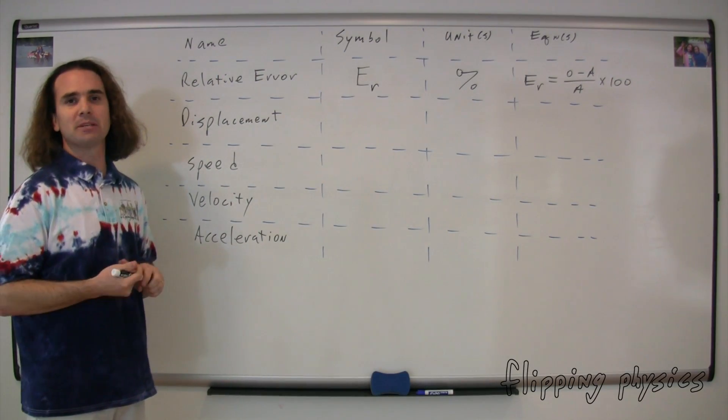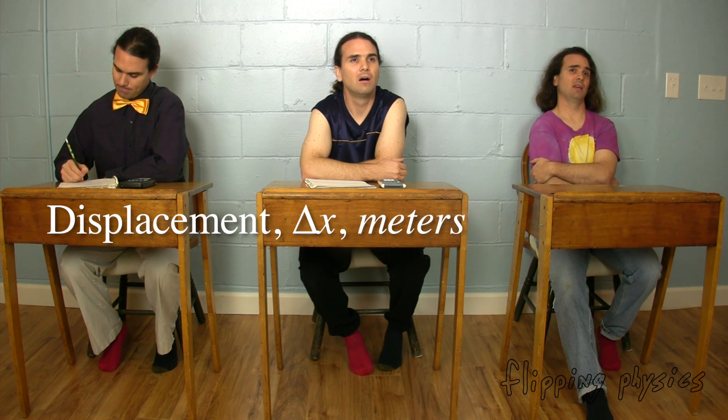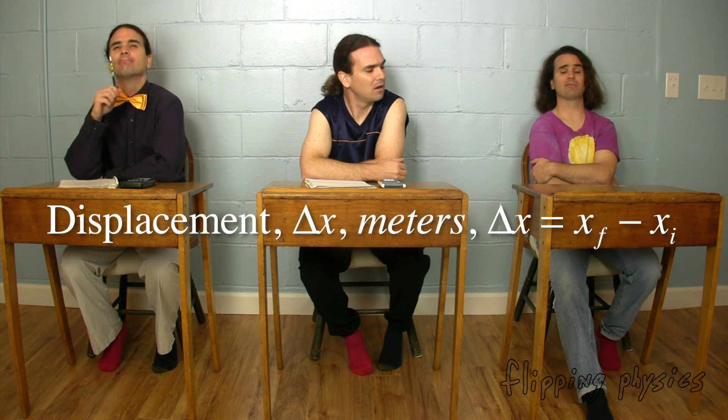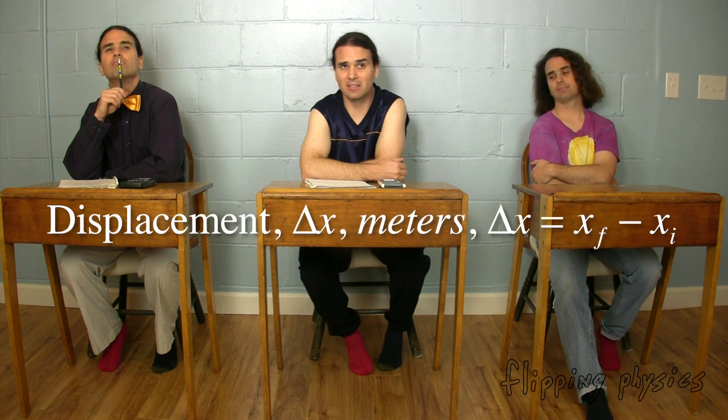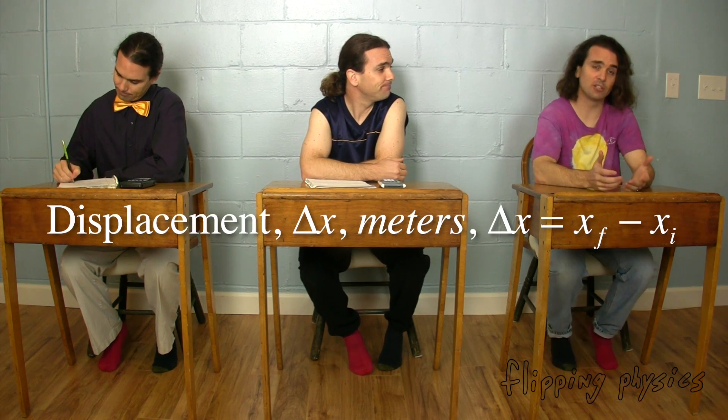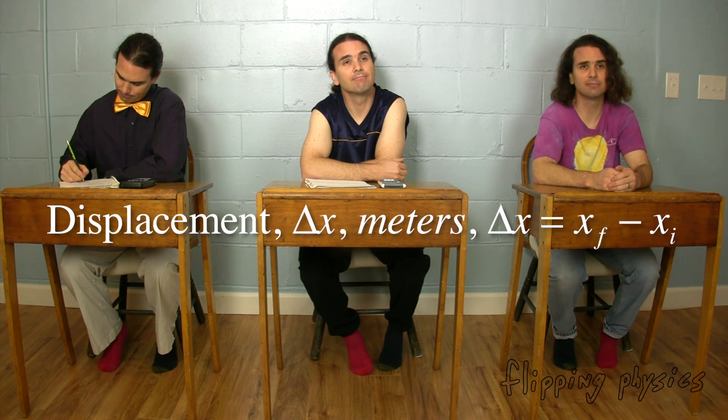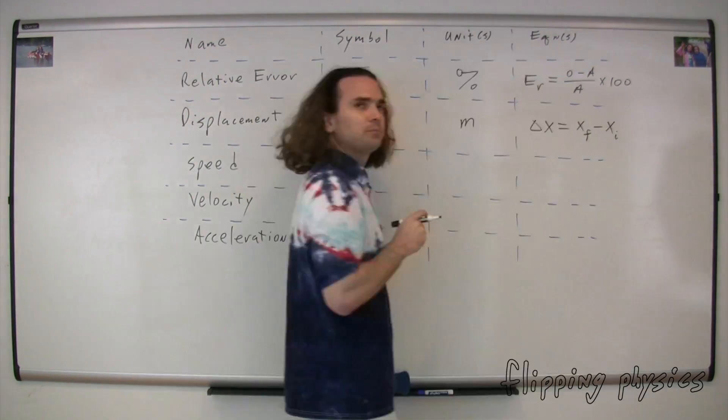Bo, how about displacement? The symbol for displacement is delta x, the dimensions are meters, and displacement equals distance final minus distance initial. Actually, x doesn't mean distance, it means position. Yeah, right. So, change in position equals position final minus position initial. Yep.